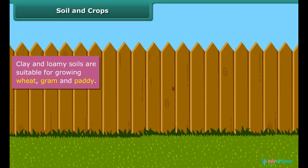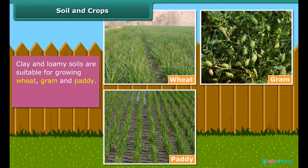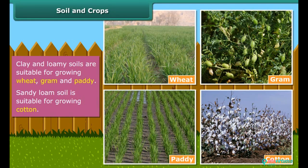Clay and loamy soils are good at retaining water. So they are suitable for growing wheat, gram and paddy. Cotton is grown in sandy loam soil which can drain water easily and can hold plenty of air.